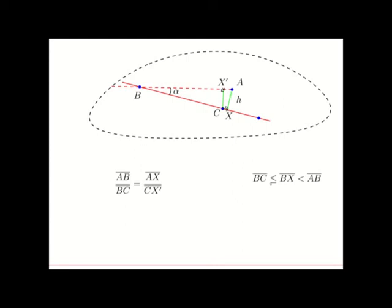So, we can conclude that BC is smaller than AB. Thus, it follows that this ratio is strictly bigger than one. Since this ratio is bigger than one, it follows that AX is larger than CX prime.